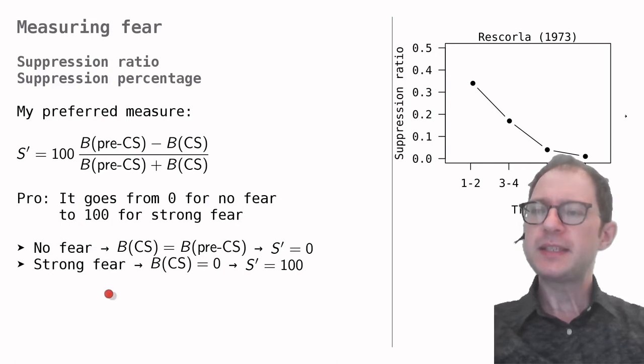Again, we can see this in the formula. If we have no fear, the two numbers will be the same, which means that the subtraction at the numerator of the fraction is zero, and so the suppression percentage would also be zero. On the other hand, if there is a strong fear, the behavior in the presence of the CS will be zero, which means that these two terms are zero, and then you have something over itself, and this will give you 100, because of the 100 multiplication in front.